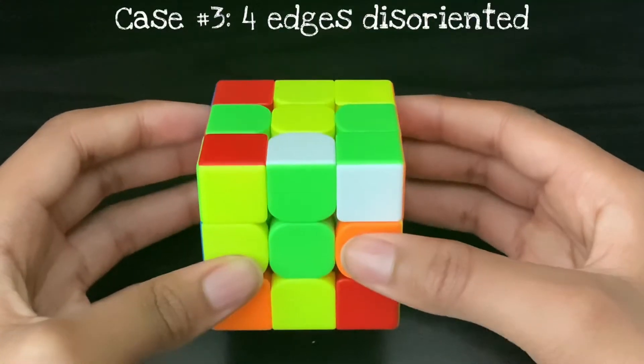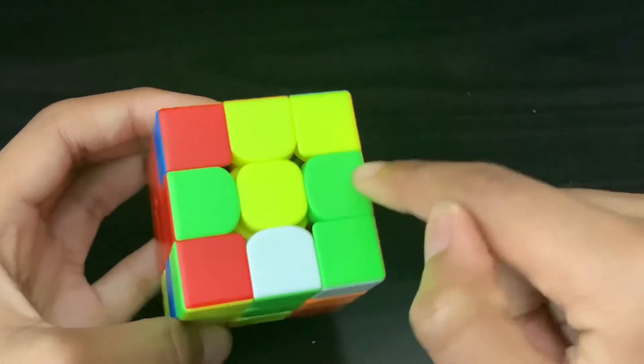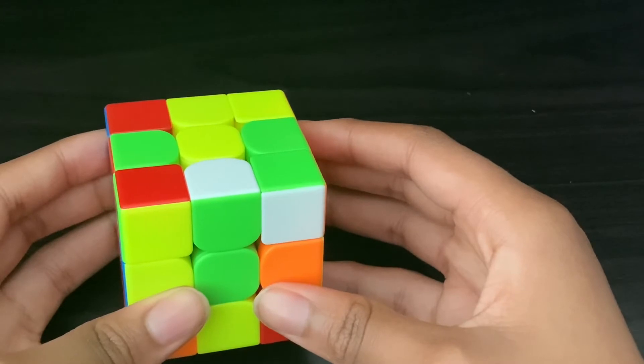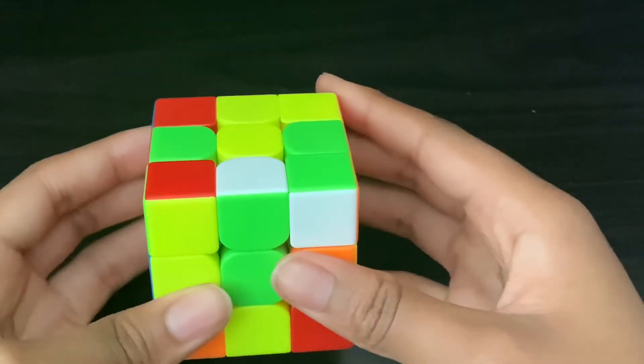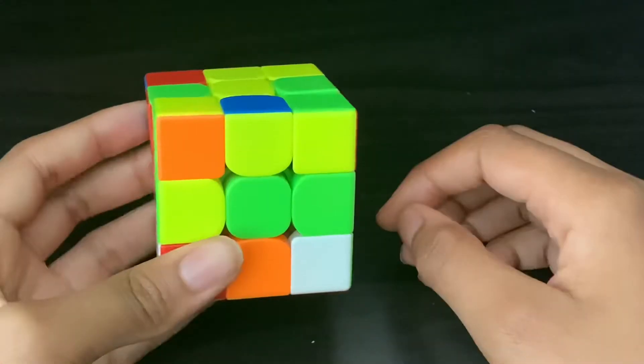The third case is when you have four edges misoriented: this one here, this one here, and these two on the top. When you have four edges misoriented, you put three of them on the top layer.